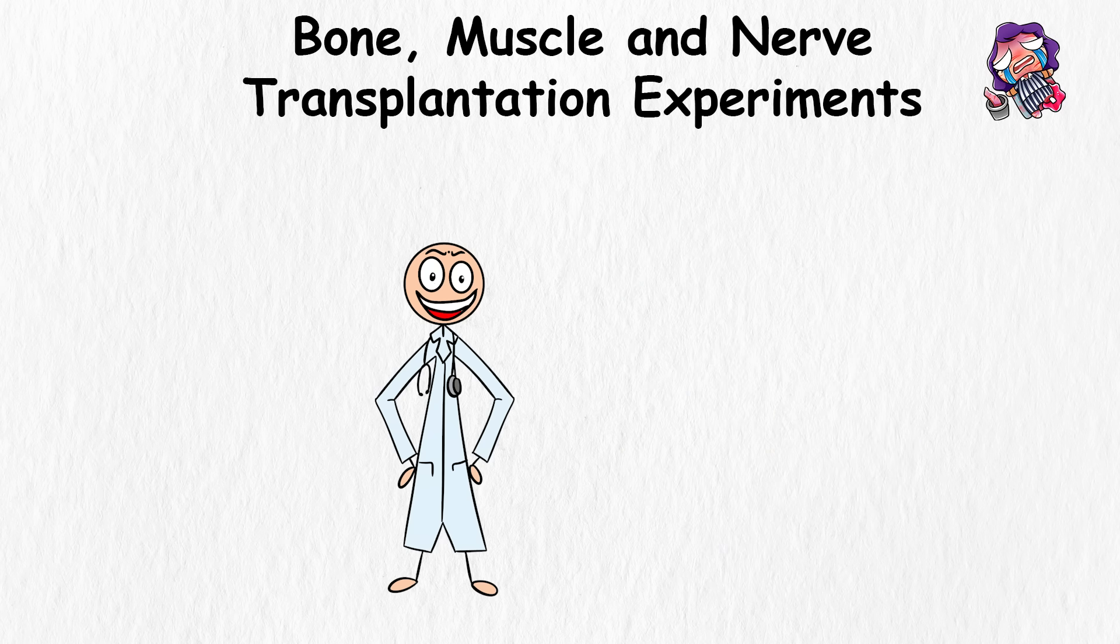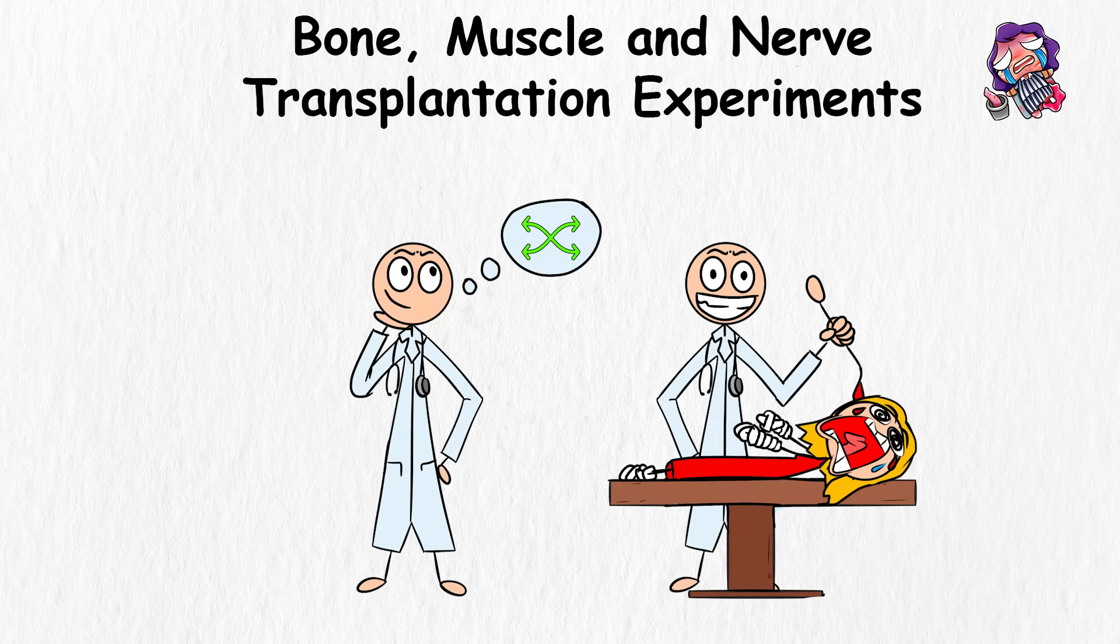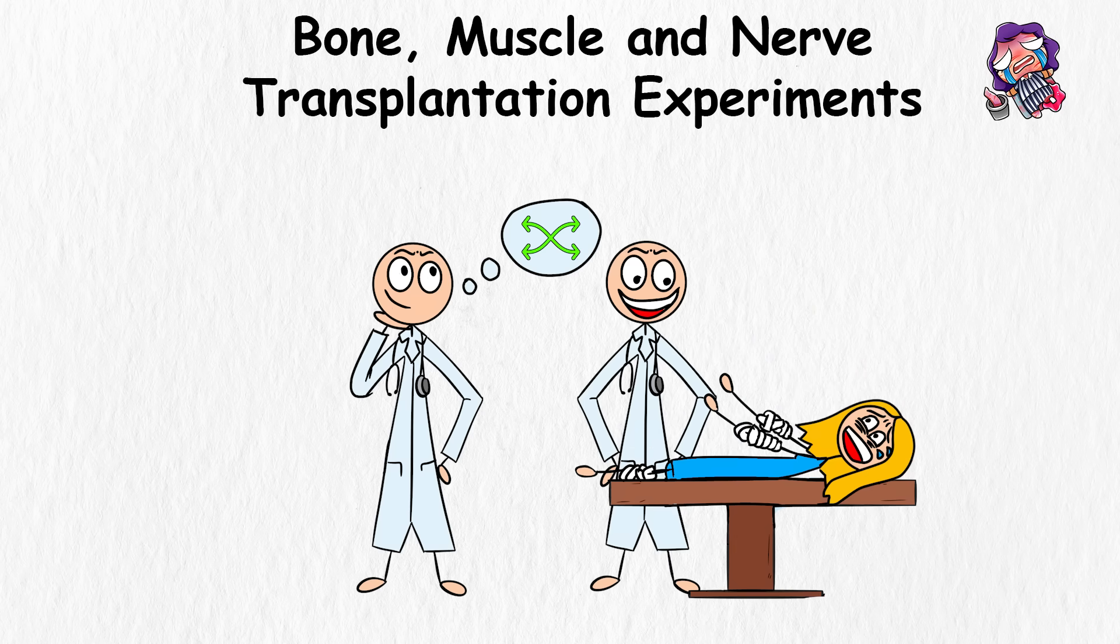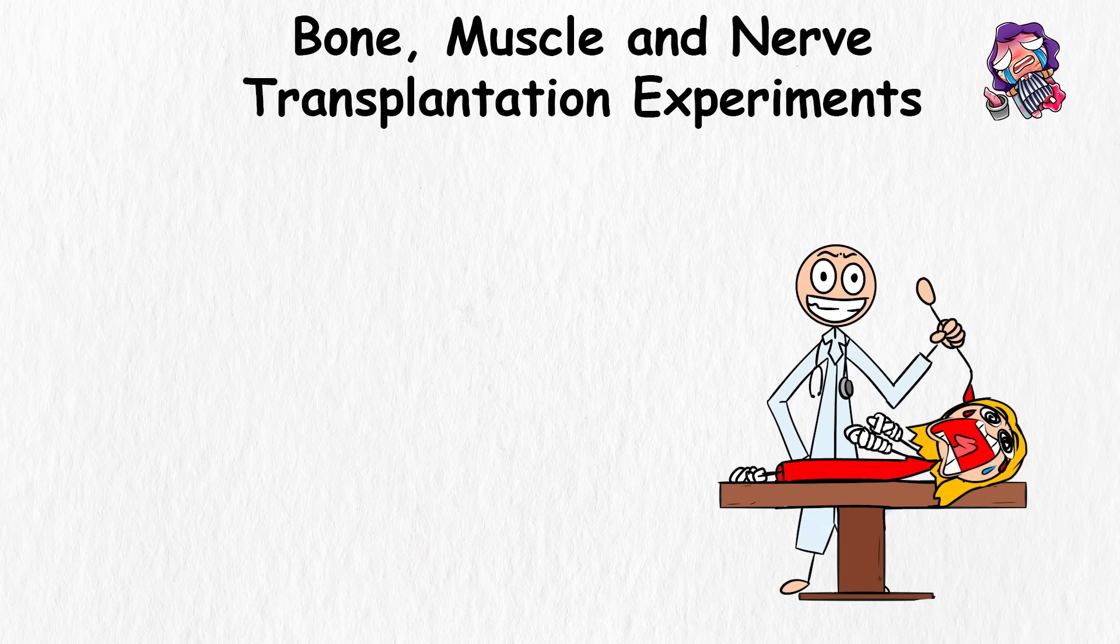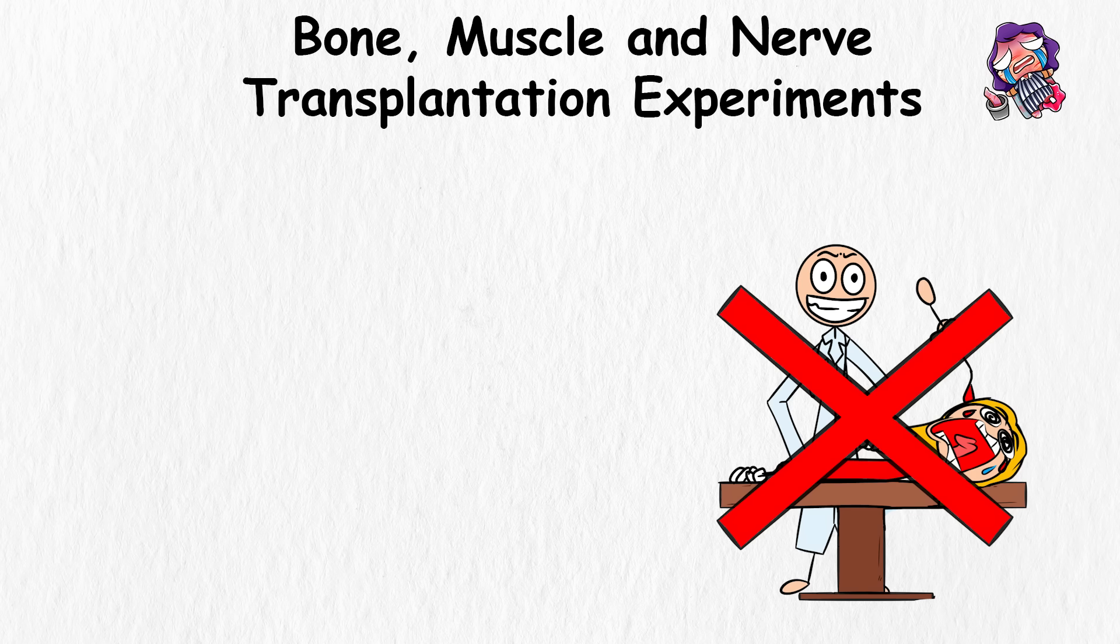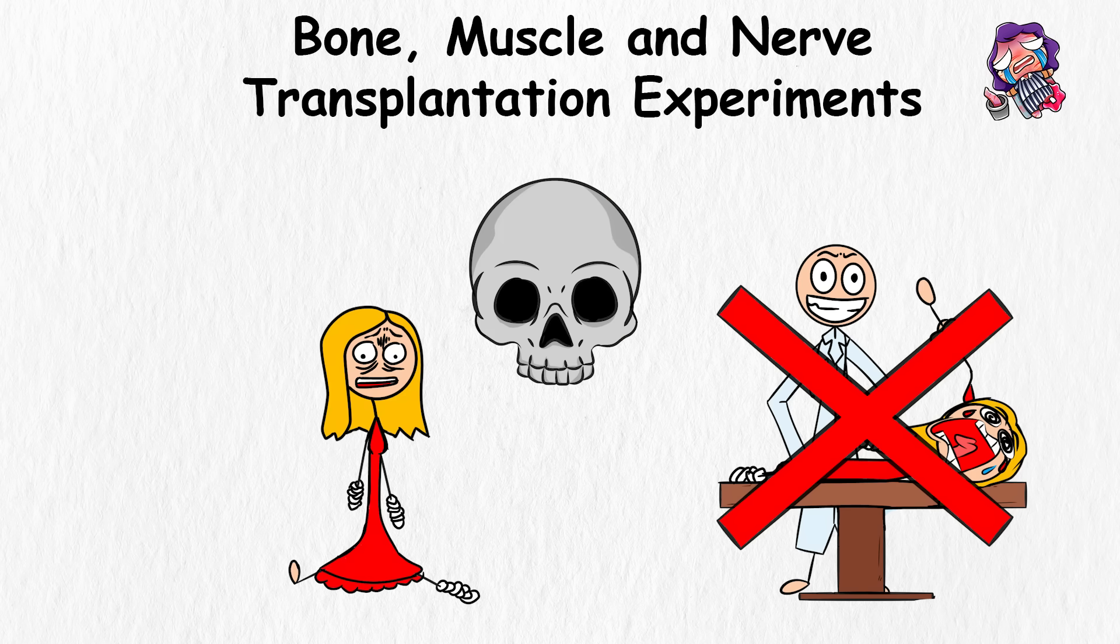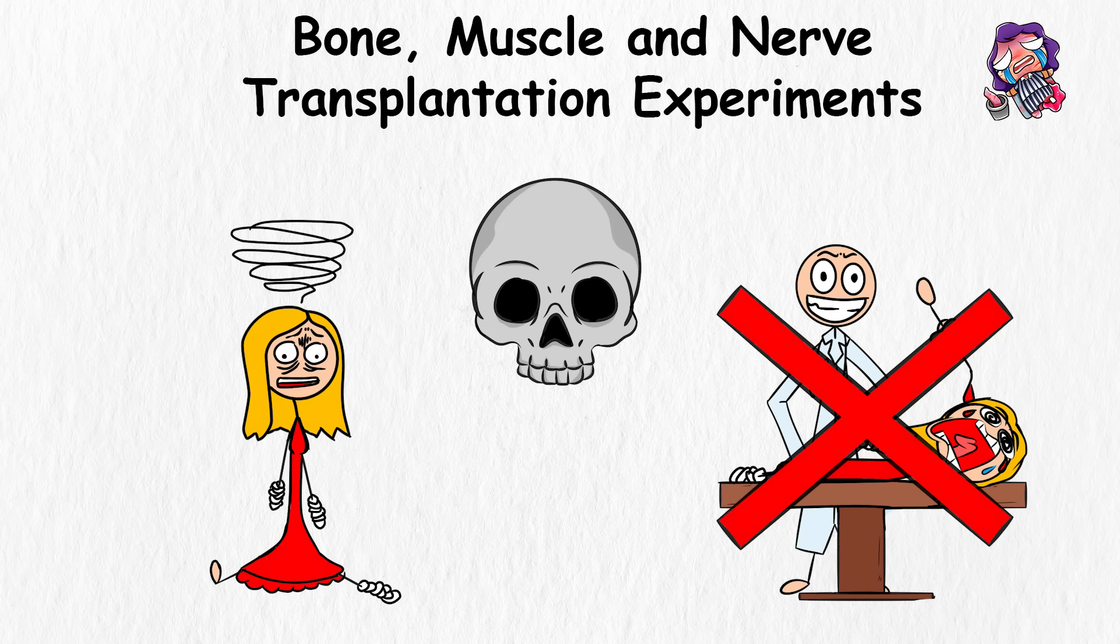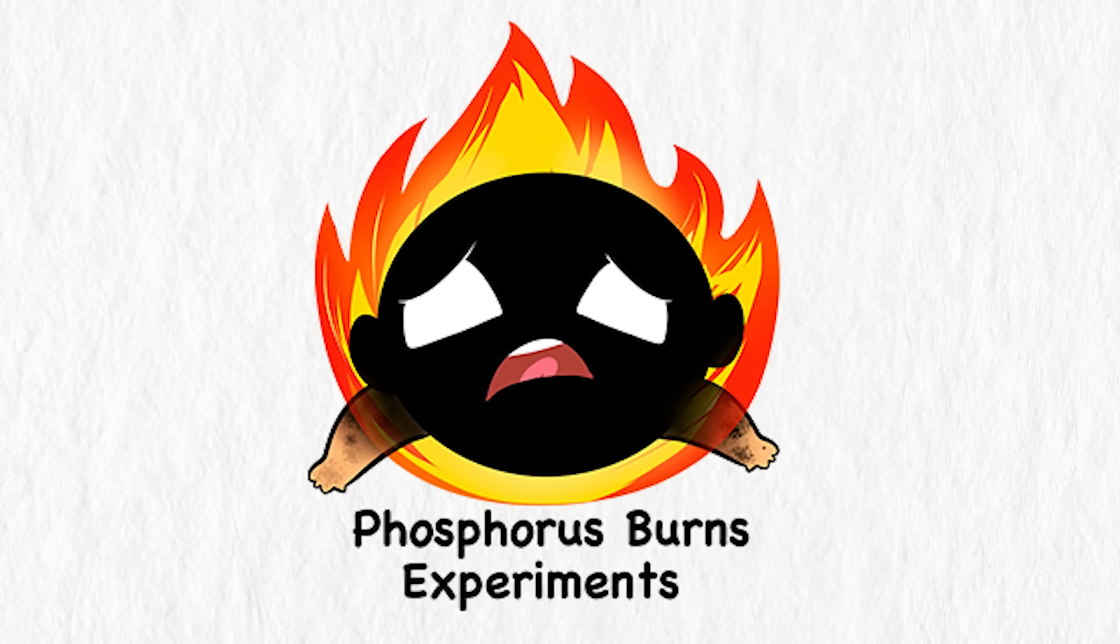And as for the reason behind these bizarre body-chopping experiments, well, the Nazi doctors were basically trying to figure out if they could remove parts of one person's body and successfully graft them onto another. Of course, the experiment didn't work, it just led to even more deaths and those who survived were left permanently mutilated and traumatized.